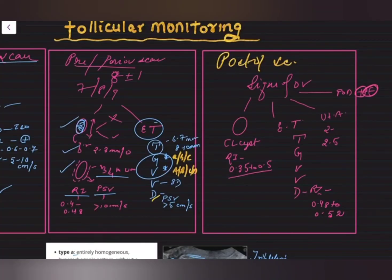So these are the three basic phases of follicular monitoring: the baseline scan on day 2 or 3, the pre- or periovulatory scan from day 7 onwards with the patient coming every alternate day, and the post-ovulatory or secretory phase where we look for the corpus luteum and endometrial characteristics.